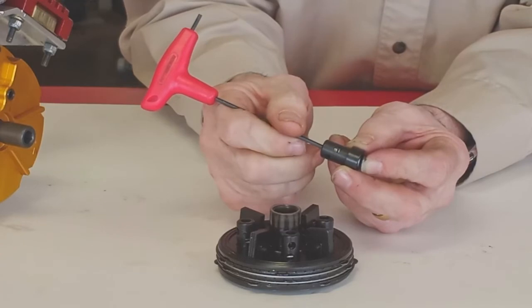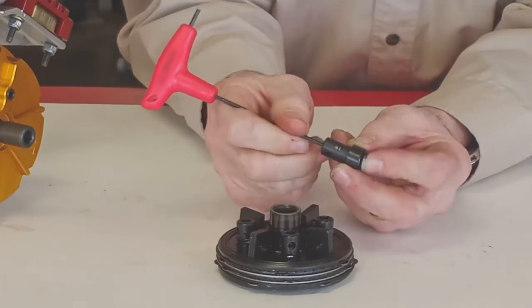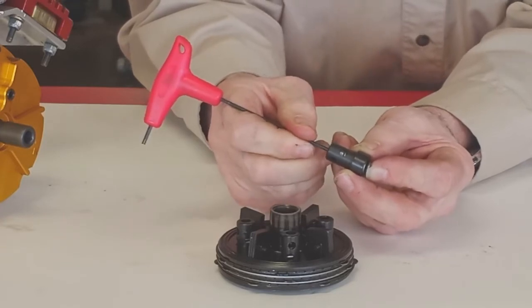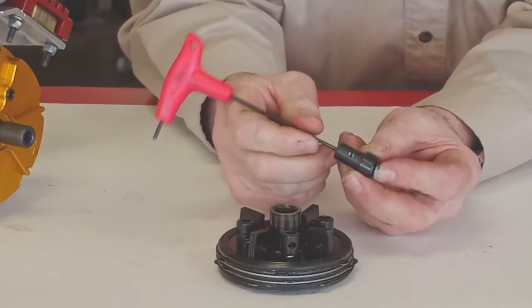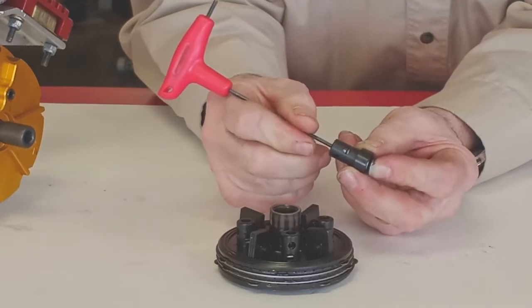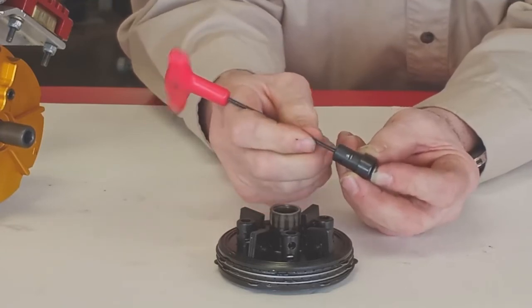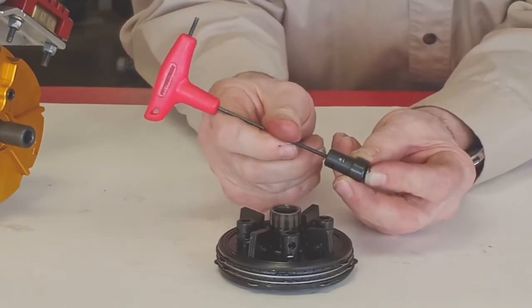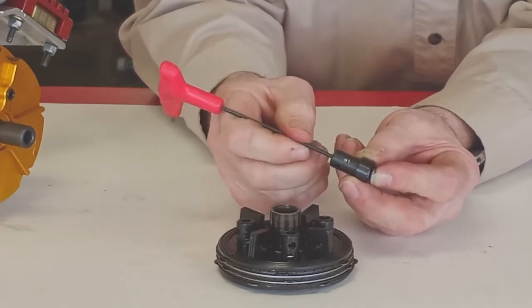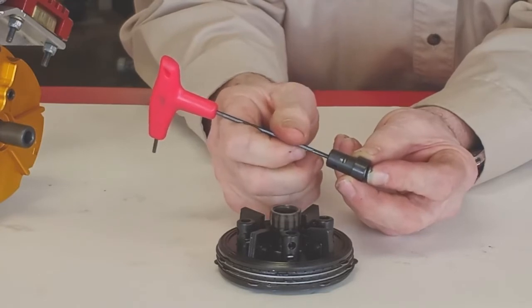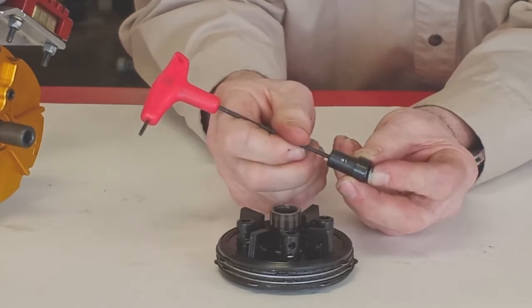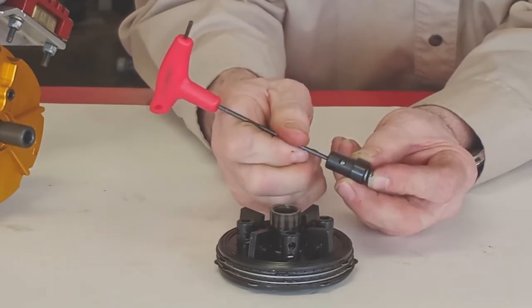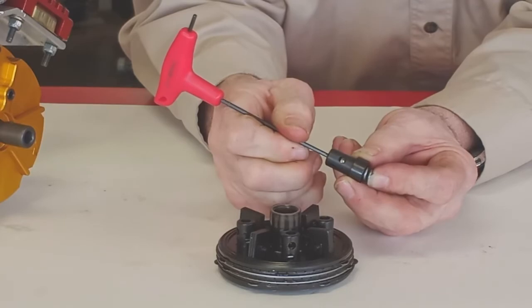One advantage of this system is that if you get lost, if you don't know where you are adjustment-wise, you don't have to take it apart and measure anything. All you need to do is turn the adjuster all the way clockwise until it stops. Then turn it counterclockwise until you feel the pressure on the spring start, and then put two and a half turns in, and you should be at a pretty good starting point.